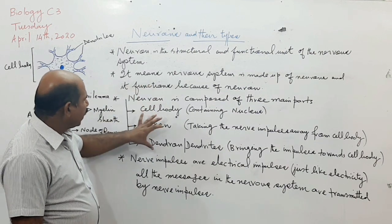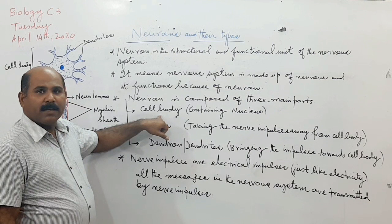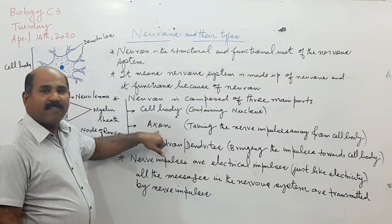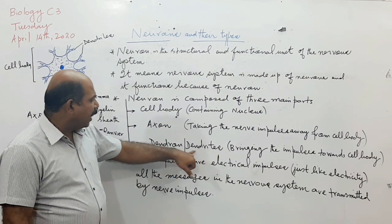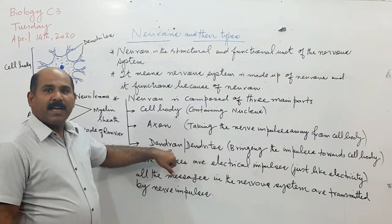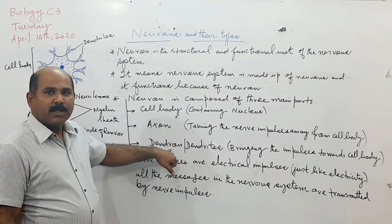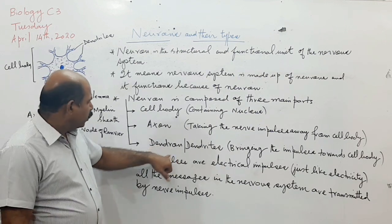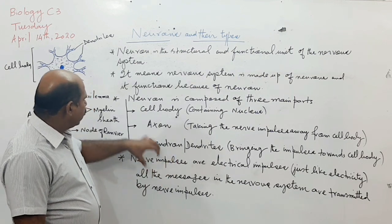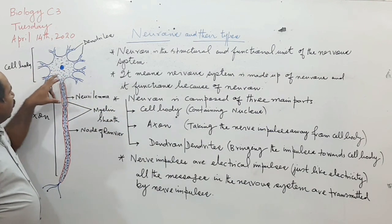When we look at the neuron, whatever the type, every neuron is composed of a cell body, an axon, and dendron or dendrites. If it is a single part it is called dendron, but if there are many, they are called dendrites.